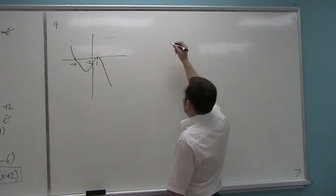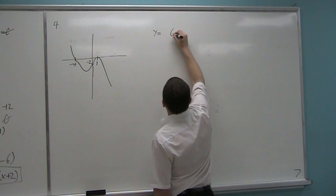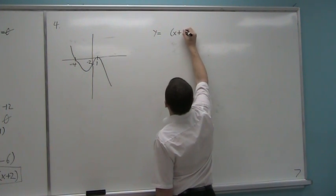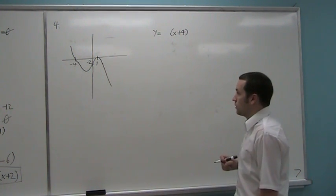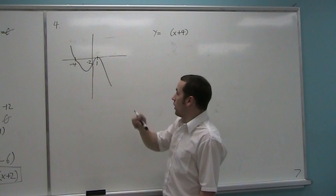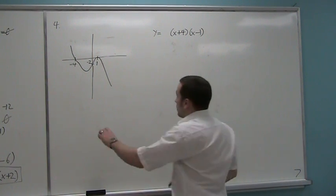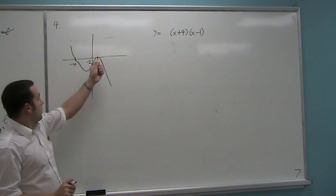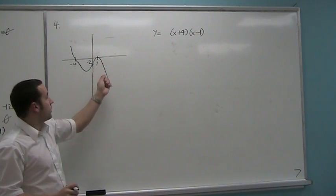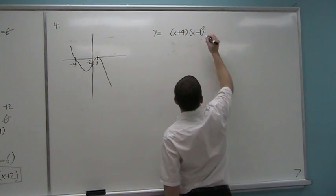One of the roots is at four. So I know I have a y equals x plus four. I have another root at one. So I know that's an x minus one. And notice here that the graph just touches at one. If it just touches, that means I have a squared root here, or a squared factor. So there's squared.